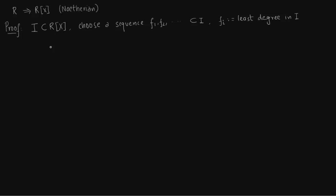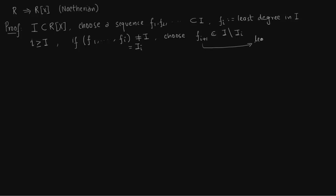Our goal is to show that I is finitely generated, which will imply R[x] is Noetherian. For each i ≥ 1, if f₁, f₂, ..., fᵢ generate I, we are done. If they do not generate I, they generate some smaller ideal Iᵢ. Then we choose fᵢ₊₁ lying in I but not in Iᵢ, of least degree among such elements — this minimality is crucial, as we will use it to derive a contradiction.